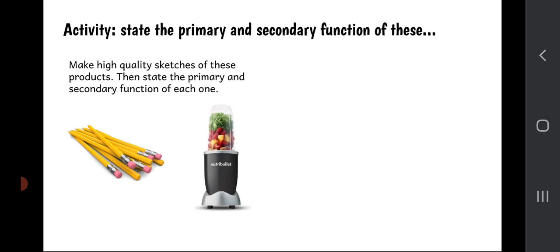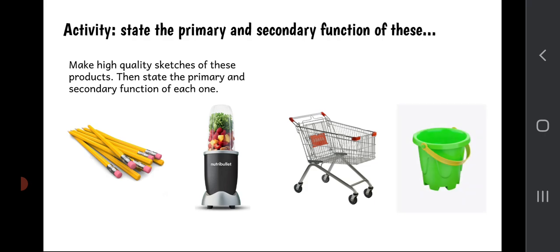Pencils, a Nutribullet thing—a juicer or a food processor. We've got a shopping trolley, and finally we've got a seaside bucket as well. I want you to do high-quality sketches of each of these. Why are we doing sketches? Because we're designers, we have to improve our visual communication skills. So in your jotter, sketch each one as best you can, and below it or beside it write the primary and the secondary function of each one.